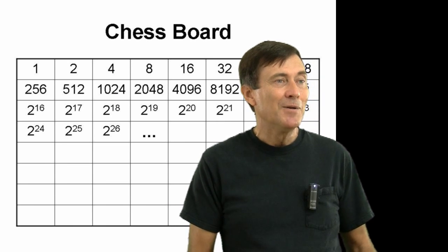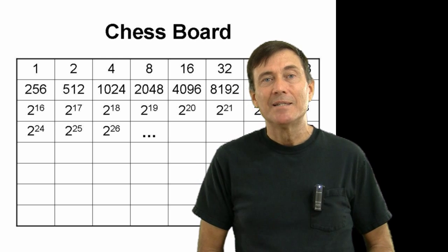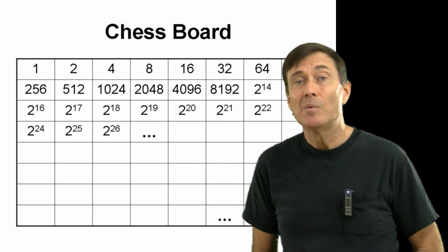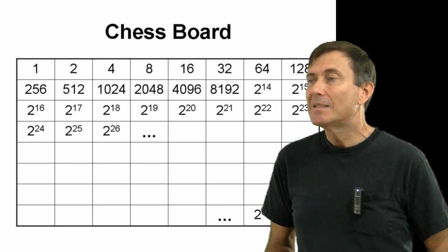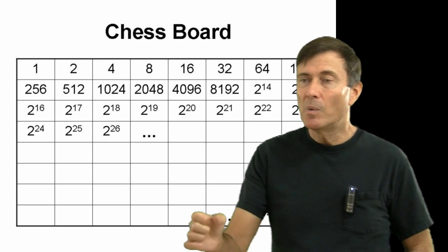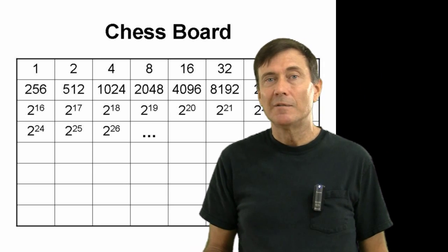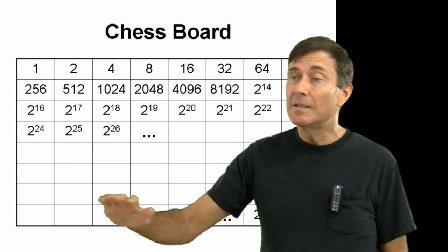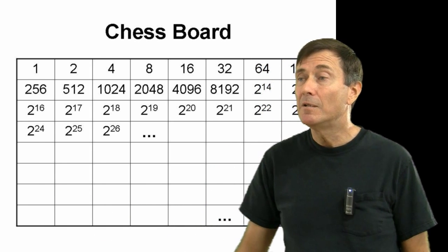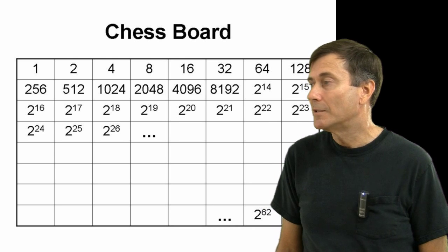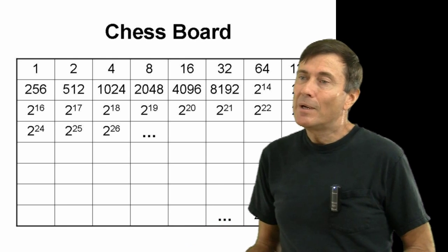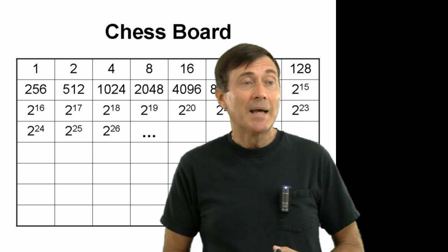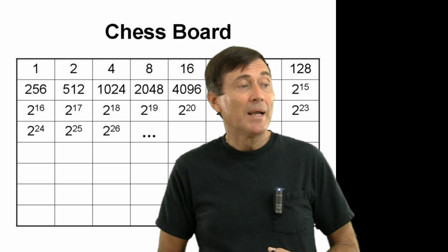You may have heard the story about the guy who invented the game of chess. It made the king very happy, and he offered a reward. The guy said he'd like some rice — on the chess board, put one grain of rice on the first square, two on the second, four on the next, eight on the next, and just keep going until you fill up all 64 squares. If you don't remember the story, the punchline is it's a really large amount of rice. The guy was playing a prank on the king.